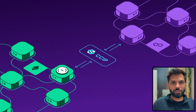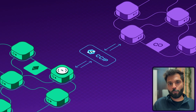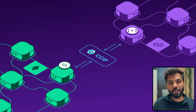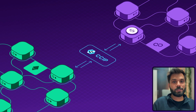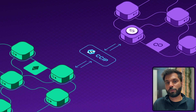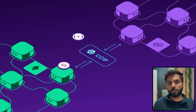With CCIP, someone can send tokens from one chain to another, send a message from one chain to another, and also send messages with tokens from one chain to another.